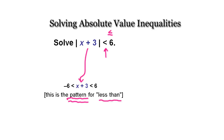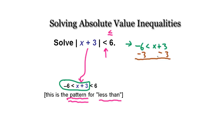So now we can actually solve for it. Looking at the first part: we have negative 6, and it's less than x plus 3. So let's solve for x. I'm going to subtract 3 from both sides. So now x is on this side because the +3 and -3 cancel, and we have negative 9 on the other side. So x is greater than negative 9.